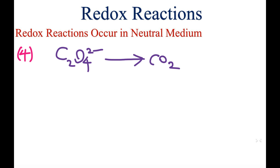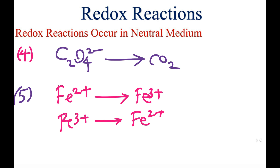In the fifth half reaction in neutral medium, Fe²⁺ becomes Fe³⁺, or conversely Fe³⁺ can become Fe²⁺.